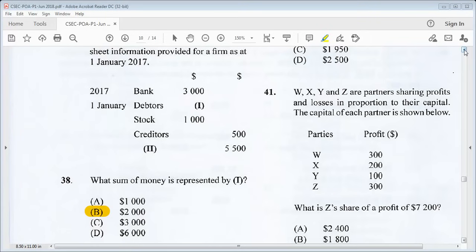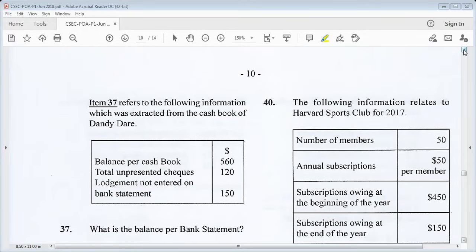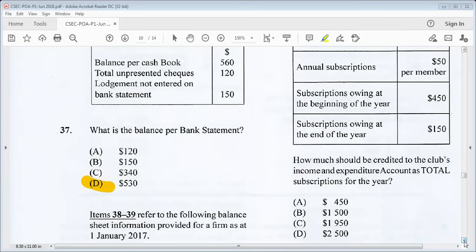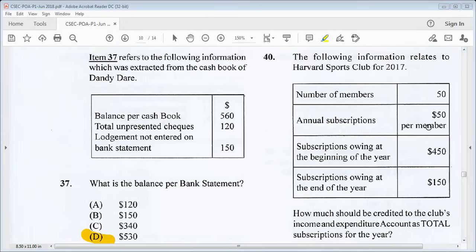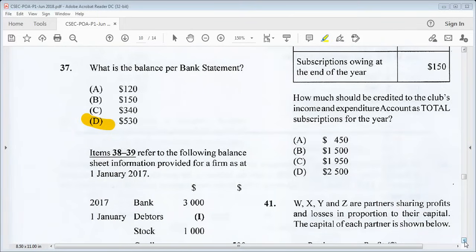Let's go on to number 40. The following information relates to the Harvard Sports Club for 2017. Number of members 50, annual subscriptions $50 per member. Subscriptions owing at the beginning of the year $150. Subscriptions owing at the end of the year $150. How much should be credited to the club's income and expenditure accounts as total subscriptions for the year? We have 50 members and $50 per member. We simply multiply $50 by 50, we get $2,500.